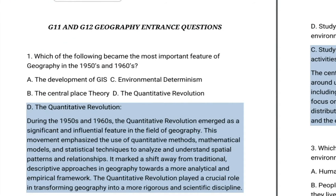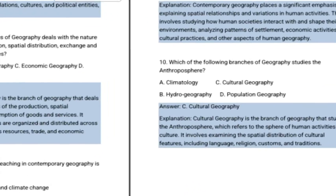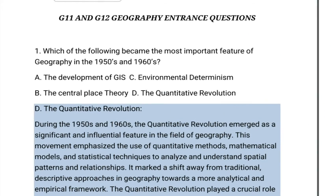Hello everyone. Welcome to Grade 11 Geography, Chapter 1. Which of the following became the most important feature of geography in the 1950s and 1960s? A. The Development of GIS. B. The Central Place Theory. C. Environmental Determinism. D. The Quantitative Revolution.